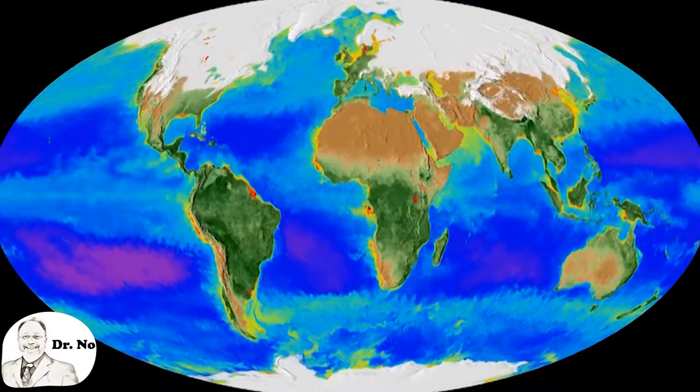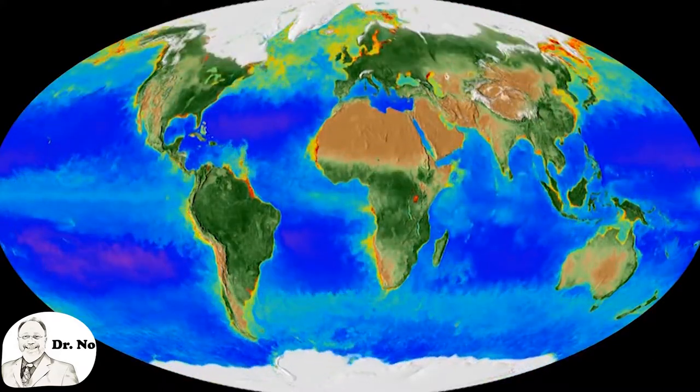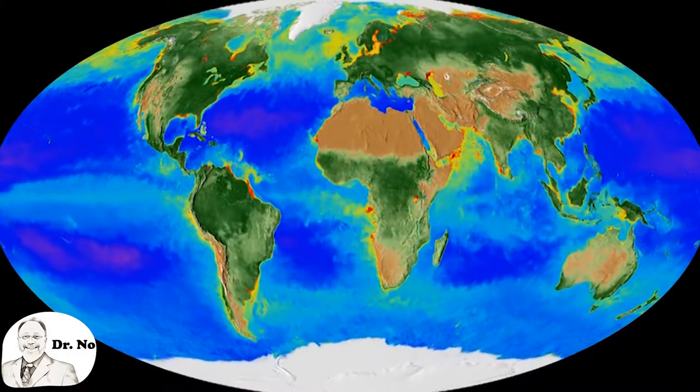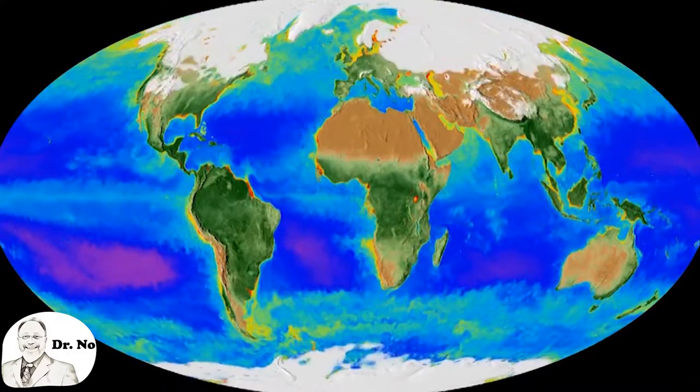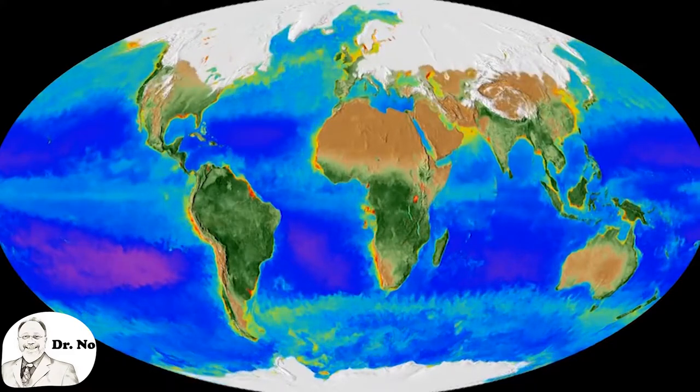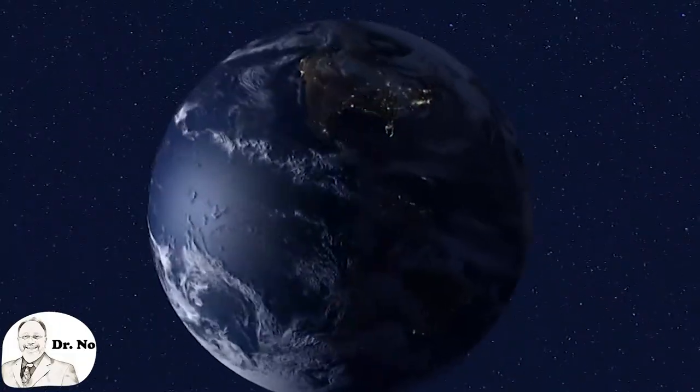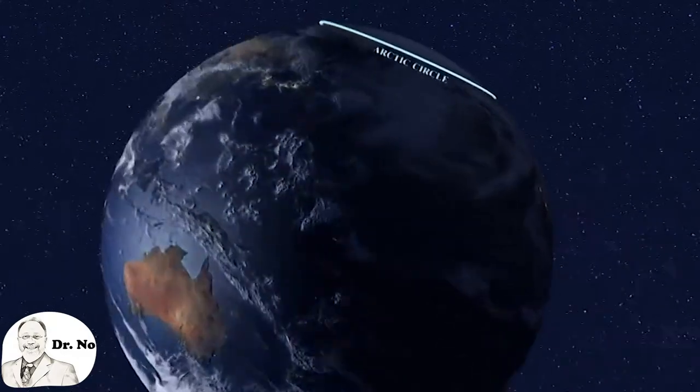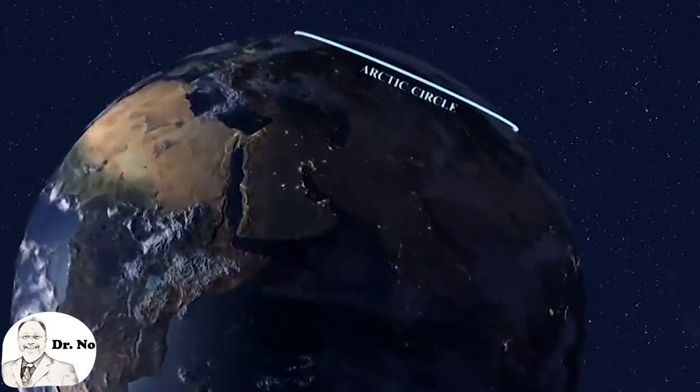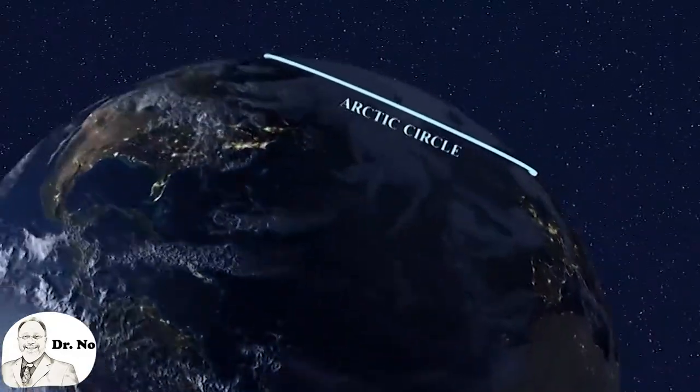There are three major factors that contribute to Milankovitch cycles: precession of Earth's axis, obliquity or the tilt of the axis, and eccentricity of Earth's orbit. To understand how those two can influence climate, it's necessary to know the basic motions of Earth.